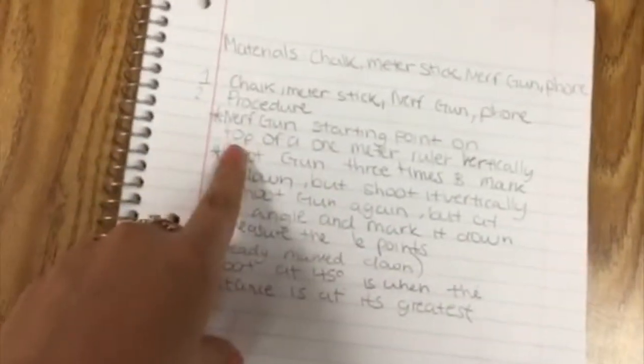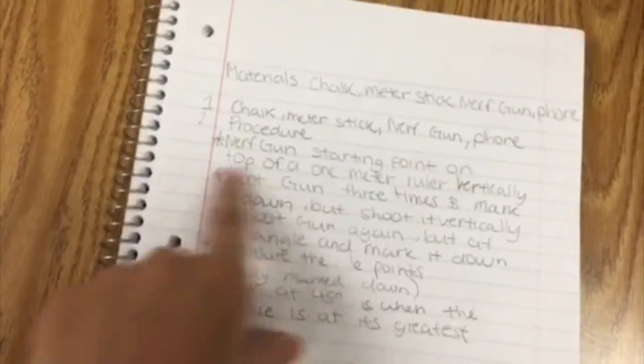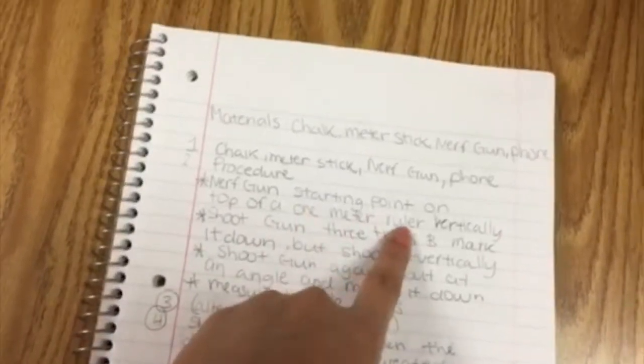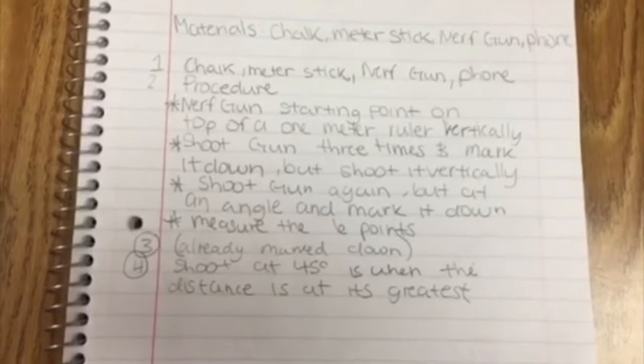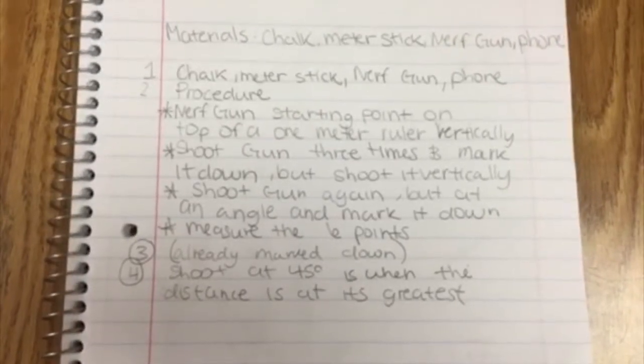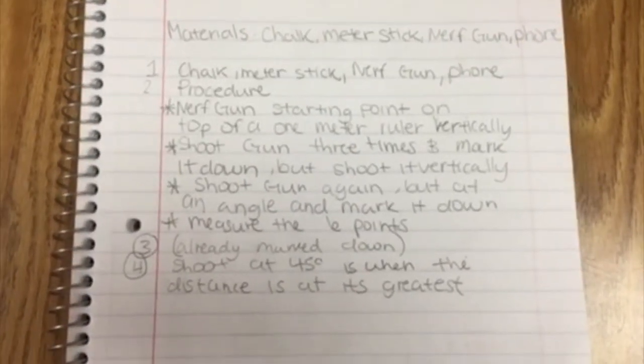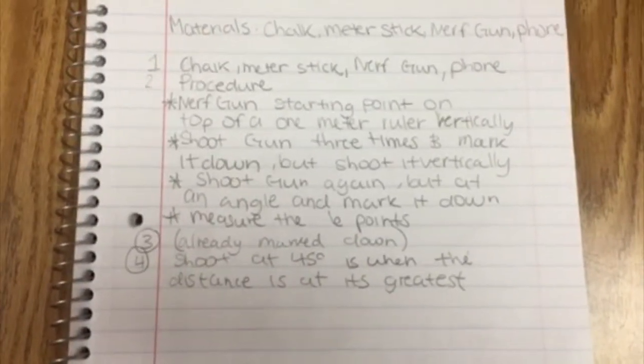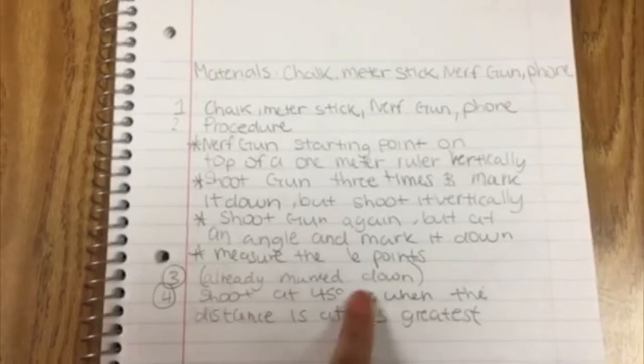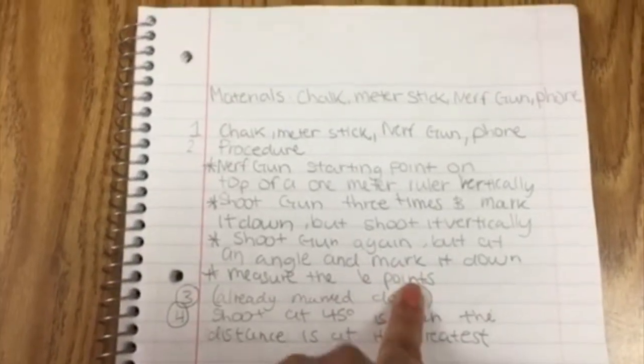Procedures. Step one, nerf gun starting at a point on top of a one meter ruler standing vertically. Step two, shoot gun three times and mark it down, but shoot it vertically. Step three, shoot gun again, but at an angle and mark it down with your chalk. Step four, measure six points.